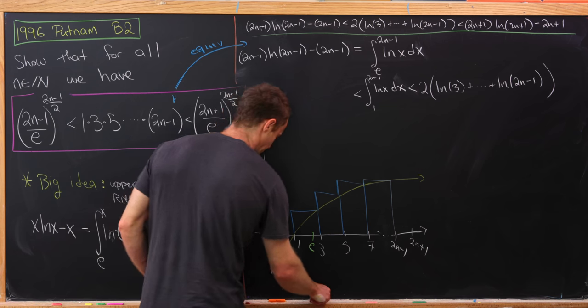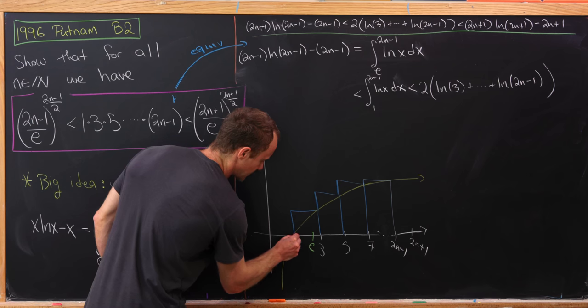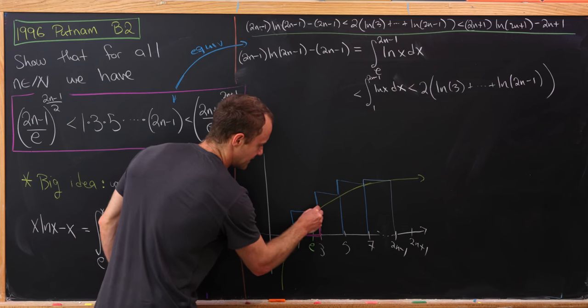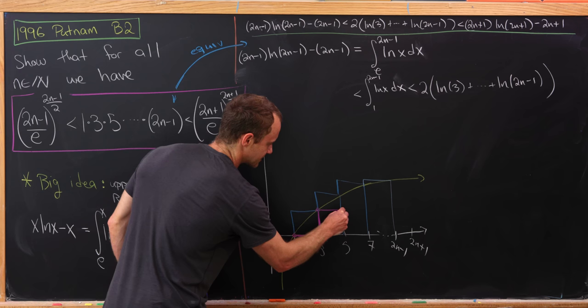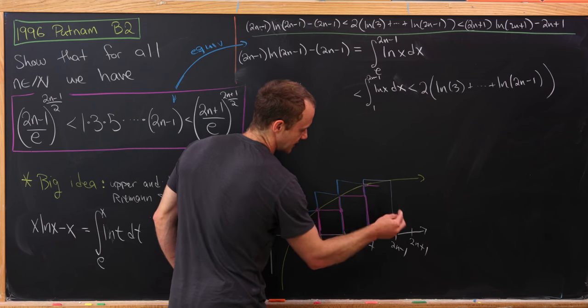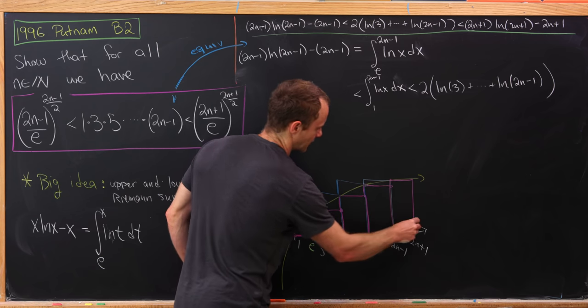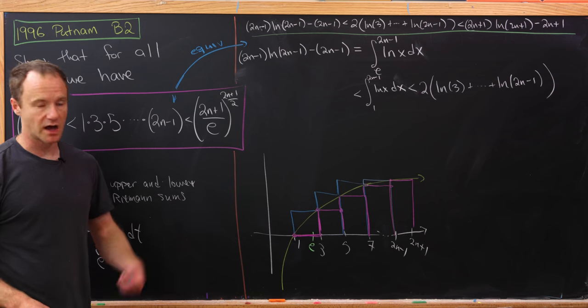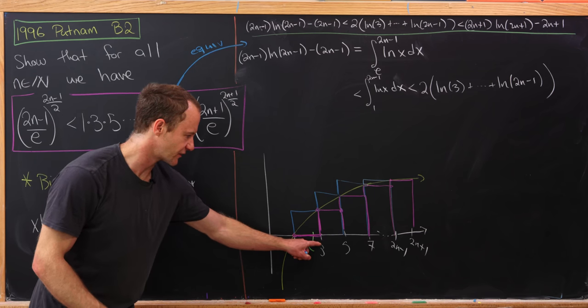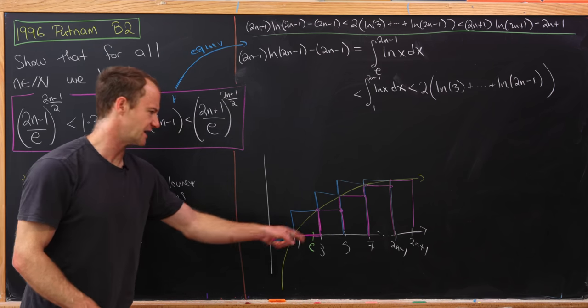And now we're going to approximate my rectangles kind of on the lower end. So let's do that. So let's say we have approximation by these magenta rectangles. So notice those are going to underestimate the value of the integral. Great. So like I said, those are going to underestimate the value of the integral.